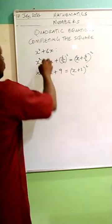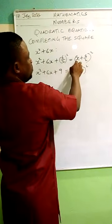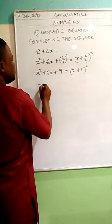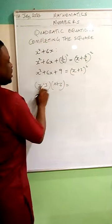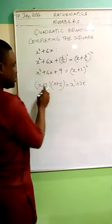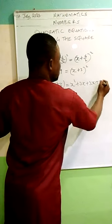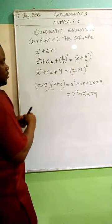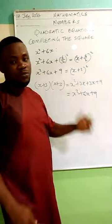So this is what we have: to make x squared plus 6x a perfect square, we added 6 over 2 all squared, which is 9, and we got x plus 3, all squared. Let me prove this: x plus 3 times x plus 3 — x times x is x squared, x times 3 is 3x, 3 times x is 3x again, and 3 times 3 is 9. Adding up: x squared plus 6x plus 9. So x squared plus 6x plus 9 is indeed a perfect square, factorizing to x plus 3, all squared.